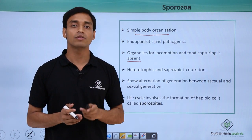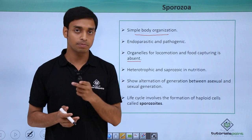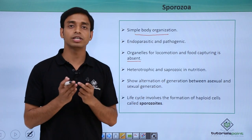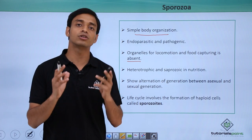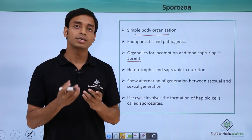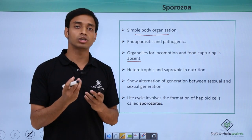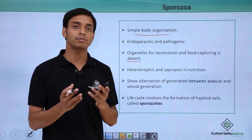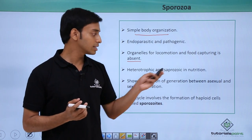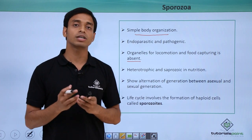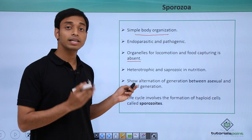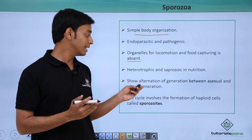Sporozoa are heterotrophic in nutrition, meaning they cannot make their own food due to the absence of photosynthetic pigments like chlorophyll. They can also be saprozoic in nutrition, meaning they digest food products outside their body and then absorb the simpler molecules, which they have digested with the help of digestive enzymes, into their body.